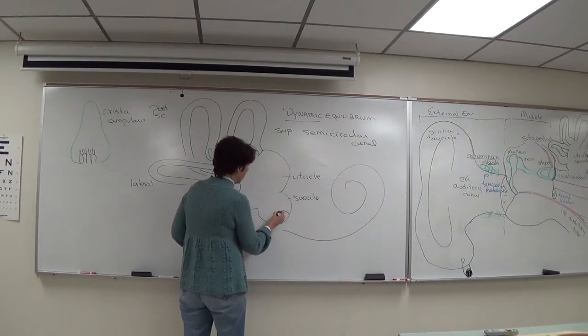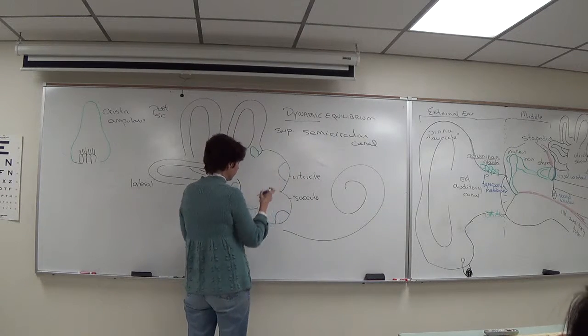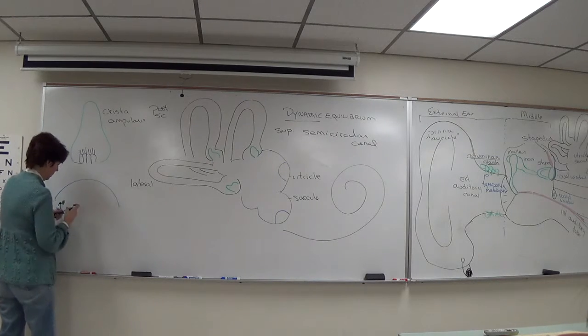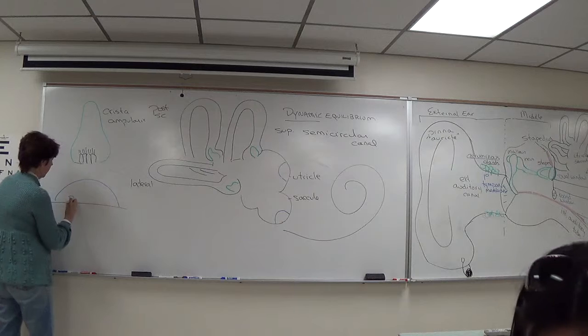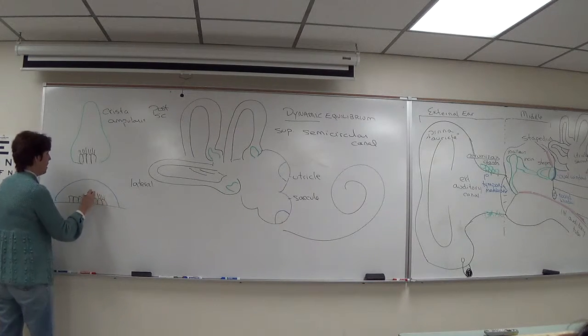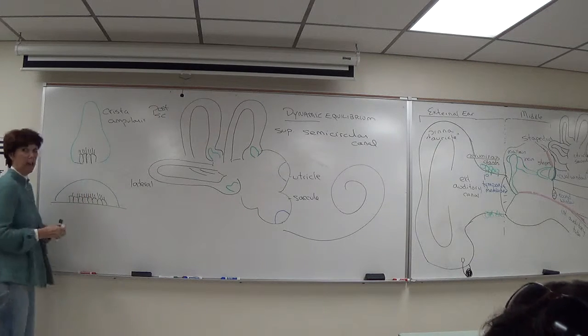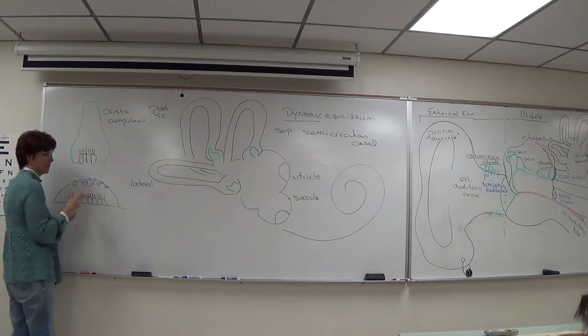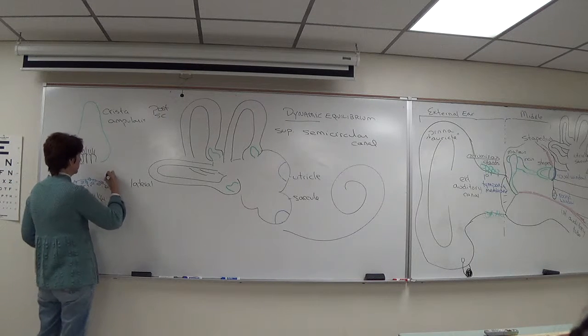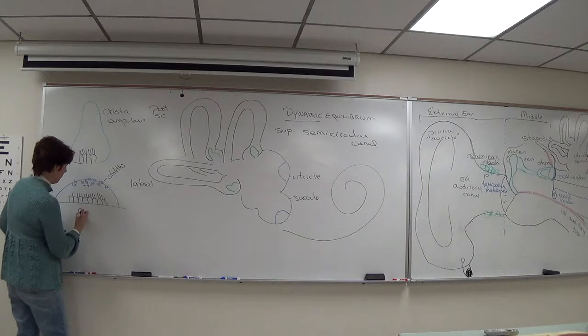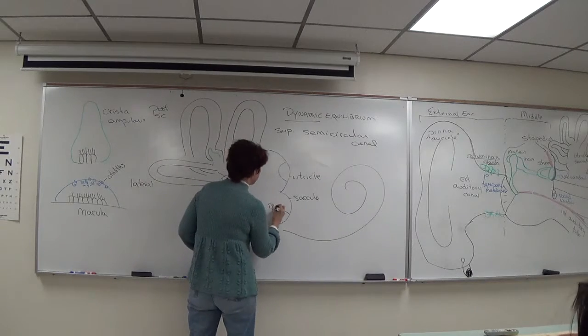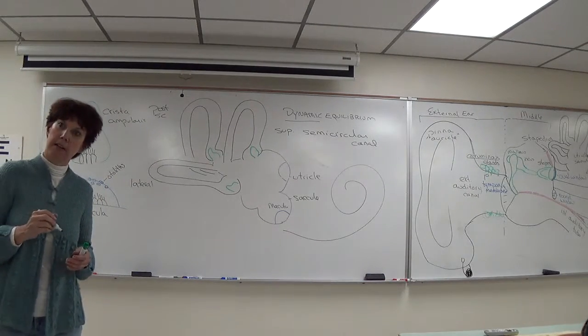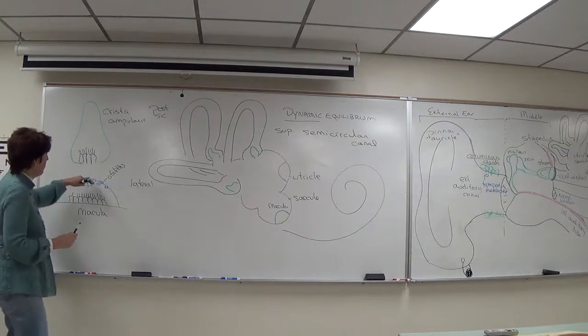And the utricle and saccule, we have a similar type of structure, a little lower, that is known as a macula. And these also have hair cells in them. Embedded in this gelatinous material, however, are mineral crystals, mostly calcium and carbonate, known as otoliths, which means ear stone. And it makes the macula top heavy.